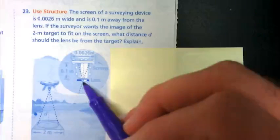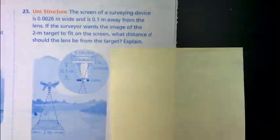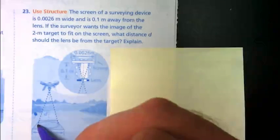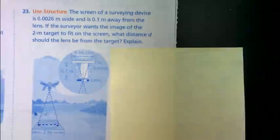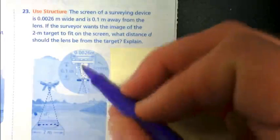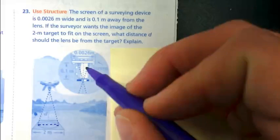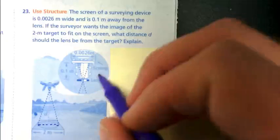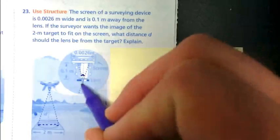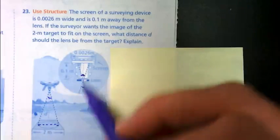The screen of a surveying device is 0.0026 meters wide and is 0.1 meters away from the lens. If the surveyor wants the image of the 2-meter target to fit on the screen, what distance D should the lens be from the target? Explain.